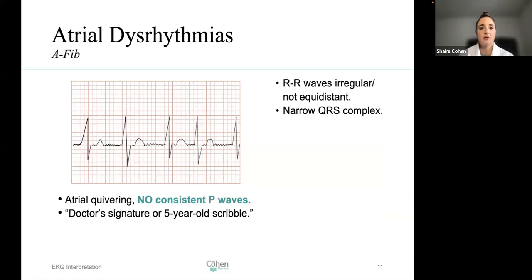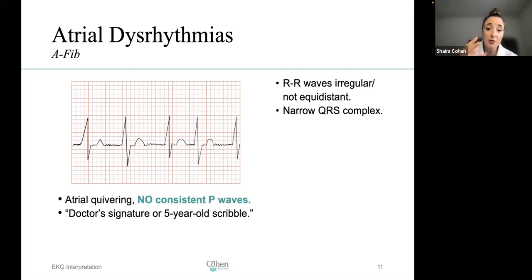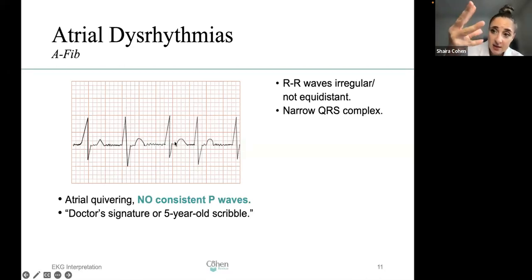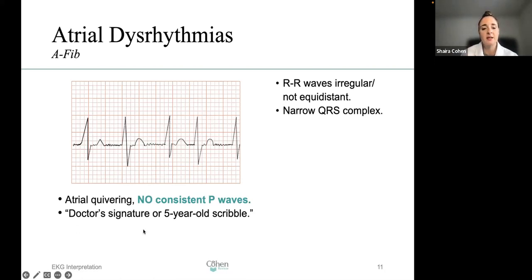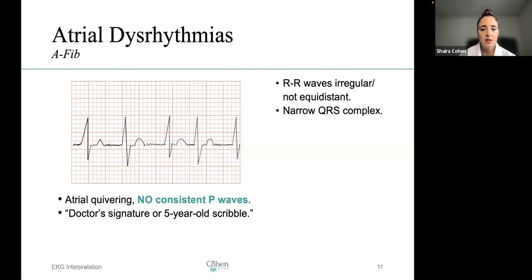Atrial fibrillation (AFib): that is when the atria are quivering. There's no fast consistent rhythm — just quivering — so there's no consistency in the P waves. Before the QRS, there's a quiver. It looks like a doctor's signature or a five-year-old's scribble. The R-to-R waves are irregular, not equidistant, and there are narrow QRS complexes. The giveaway for AFib is that the atria are quivering with no consistent P waves.